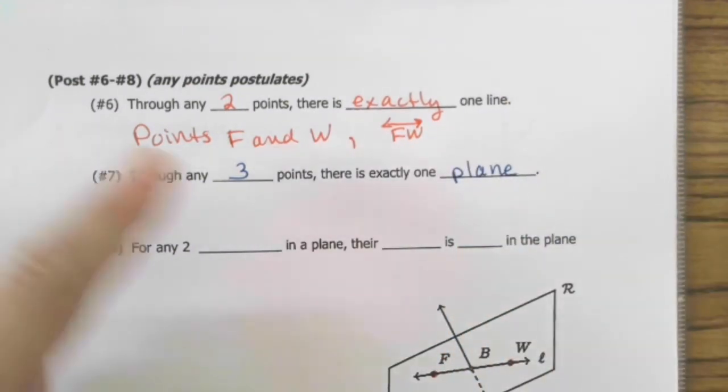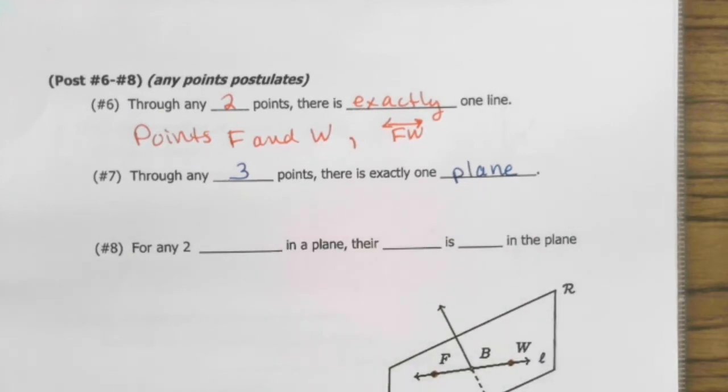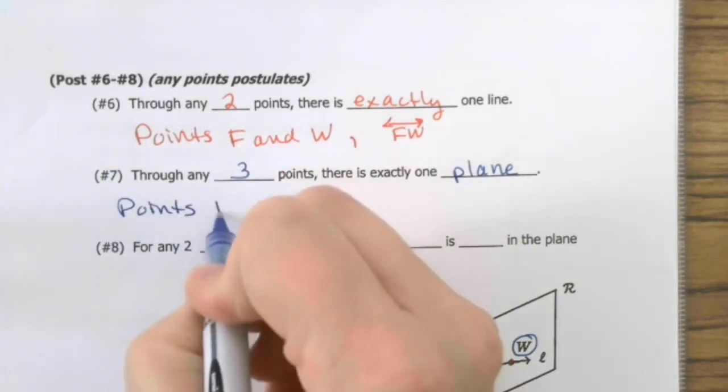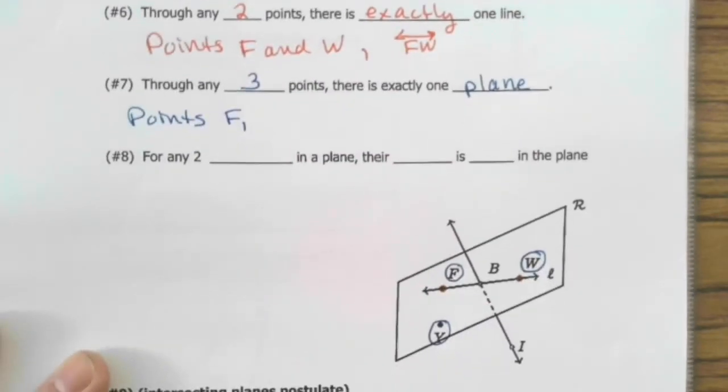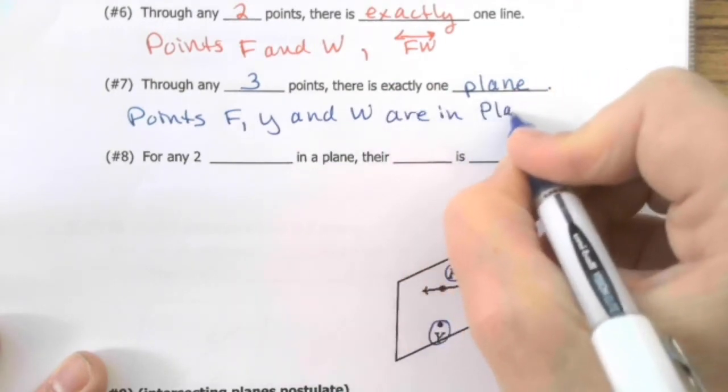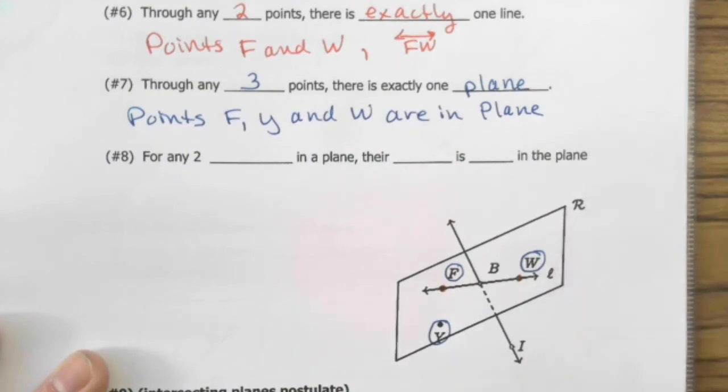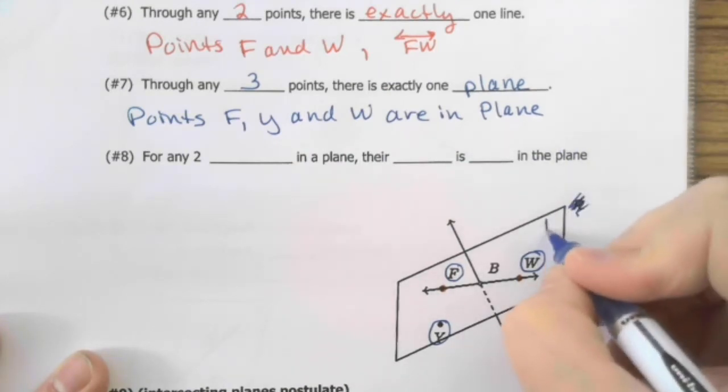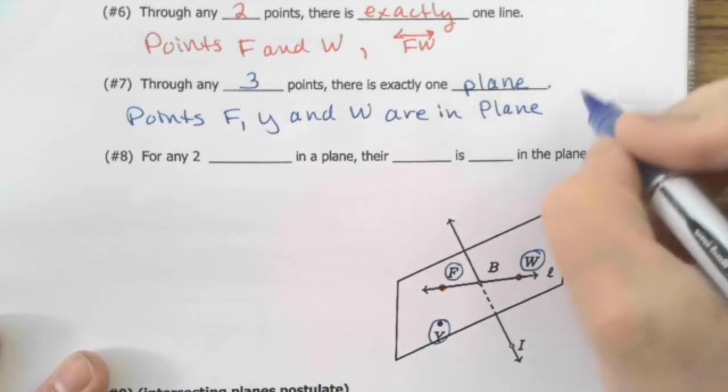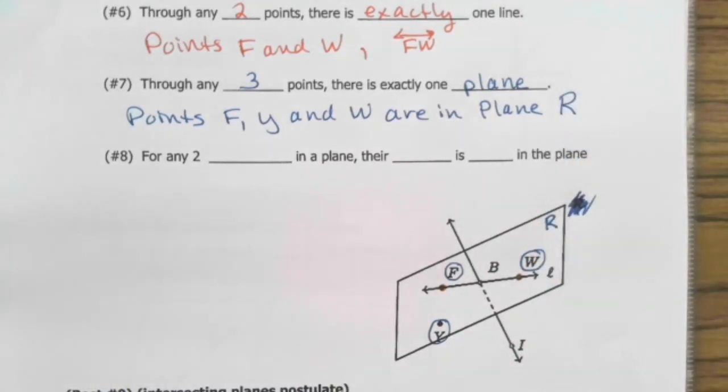This is why these are called the any postulates. It's through any. And so as you can see, if you use F, Y, and W, there is only one plane that those three things can be sitting in. And we would say that points F, Y, and W are in plane. And see the name of the plane? It's italicized. This I don't see very often. I more often see the capital R resting in the corner that way. So that's not something you're going to see. You're going to see it on the plane. This is plane capital R.